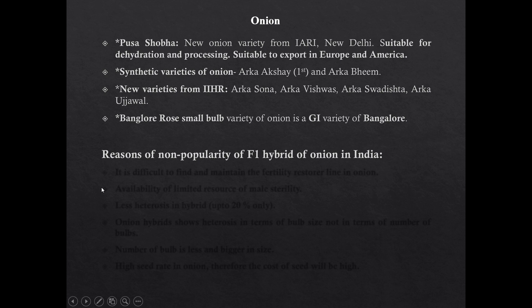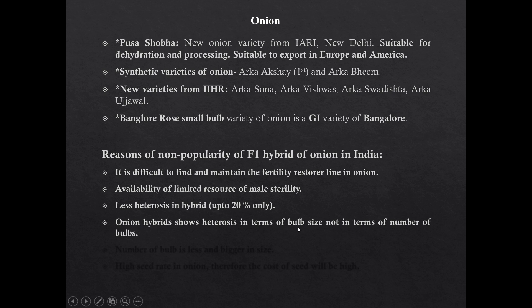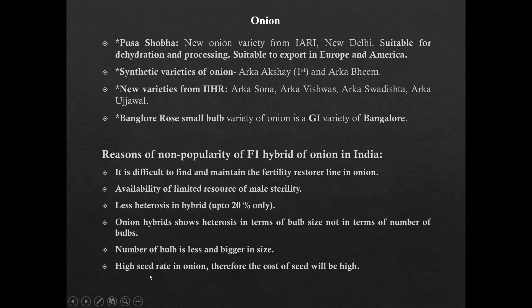Reasons for non-popularity of F1 hybrid varieties in onion: it is difficult to find and maintain the fertility restoration line and there is limited availability of male sterile sources. Heterosis in onion hybrids is less — onion hybrids show heterosis in terms of bulb size, not bulb number. The number of bulbs in onion is less but the size of the bulb is bigger. Since in India medium-sized bulbs are generally preferred, hybrids are not popular. The yield is also less, and the high seed rate of onion ultimately increases the cost of hybrid seed.